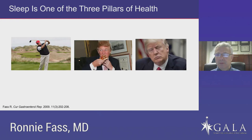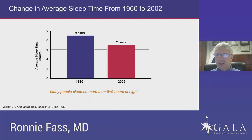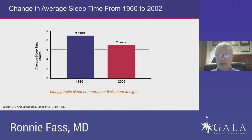When you look at data from 1960 to 2002 — over a 40-year period — we lost on average two hours from our sleep. When we look today, most of the adult population sleeps on average no more than five to six hours per night, suggesting that a significant part of our population falls under the category of being sleep deprived.